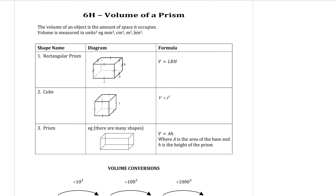Today we're moving on with volume of a prism. There are three formulas at the top of the page. To find the volume of a rectangular prism, we will be given three numbers: the length, the breadth, and the height. To find the volume, all you need to do is multiply those three things together using the formula V equals LBH.